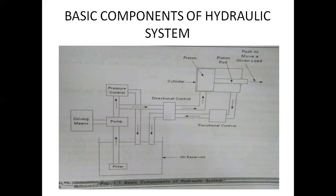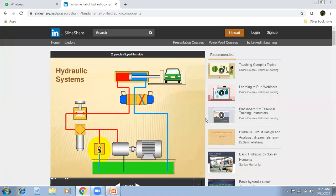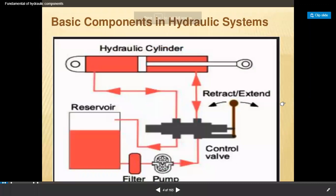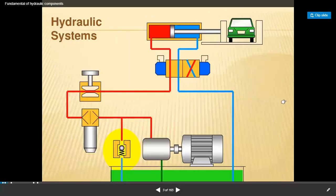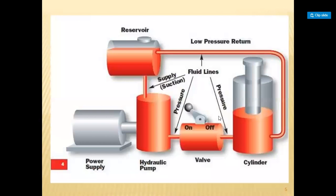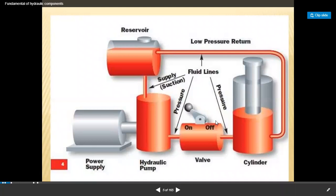First, we can see the oil reservoir — it is used to store the fluid. You can also see the reservoir, filter, pump, direction control valve, and retract-and-extend hydraulic cylinder. The hydraulic system diagram shows a power supply unit, hydraulic pump unit, valve control valves, cylinder reservoir, and pressure control valves. There is also a reservoir, pressure regulator, pump, filter, direction control valve, motor, cylinder, and flow control valve.